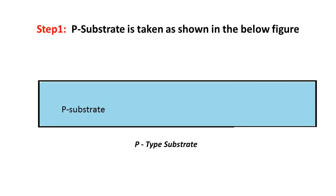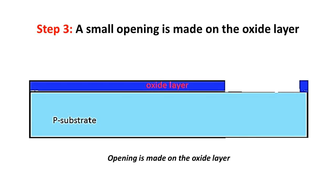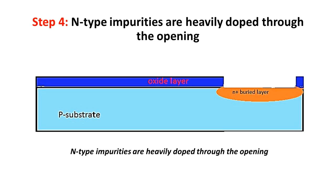Step 1: P-substrate is taken as shown in the below figure. Step 2: The P-substrate is covered with the oxide layer. Step 3: A small opening is made on the oxide layer. Step 4: N-type impurities are heavily doped through the opening.